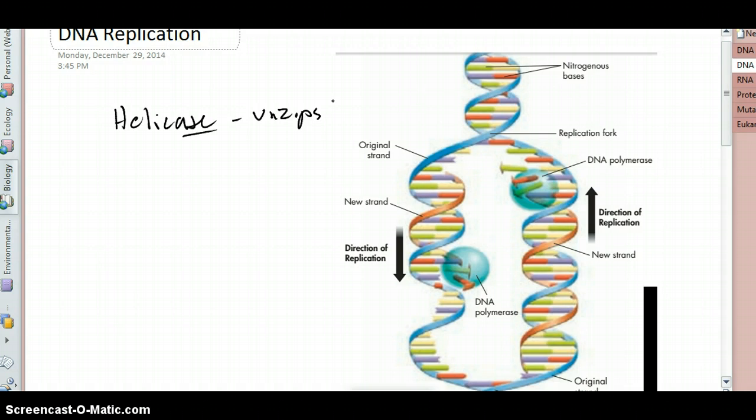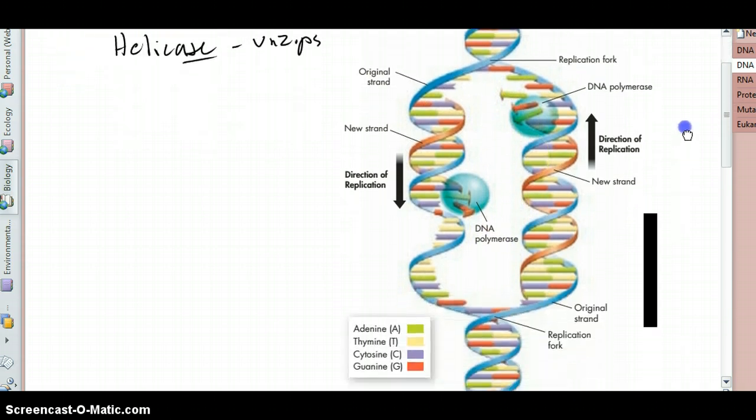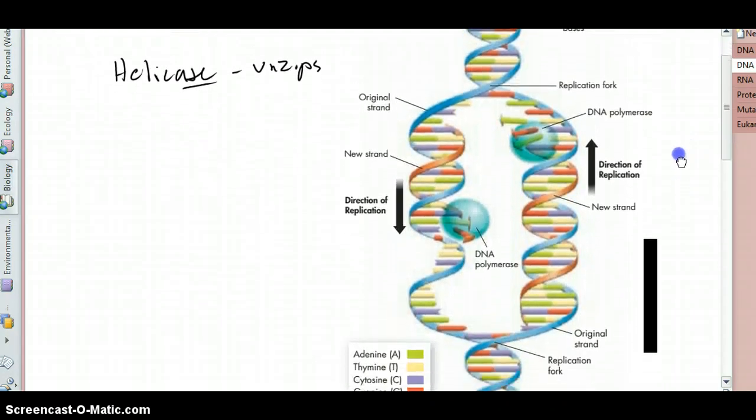All right, so as you'll recall from first semester, our chromosomes are linear. They're just big, long strands of this double helix molecule. And so what happens is, at some point inside the chromosome, inside the DNA, the helicase will unzip it, and so you can see it's still zipped together at either end, but in the middle here, it's been pulled apart.